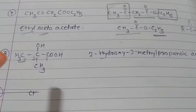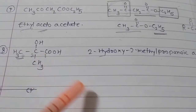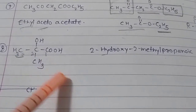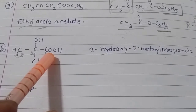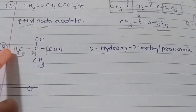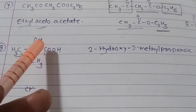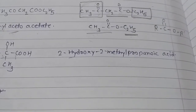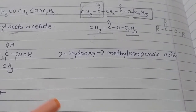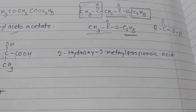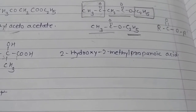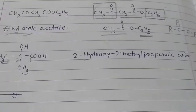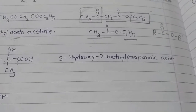The next example: carboxylic acid is the major functional group and alcohol is a substituent. So numbering is done from the carboxylic acid carbon — one, two, three. So the name is 2-hydroxy-2-methyl-propanoic acid. Hydroxy is written first because alphabetically H comes before M for methyl. There are three carbons for propanoic acid.